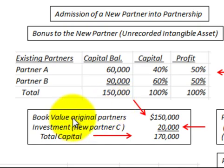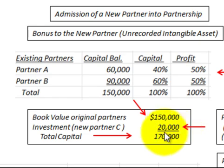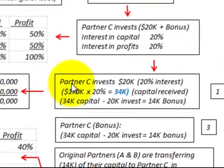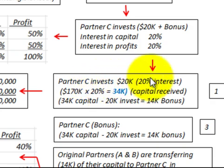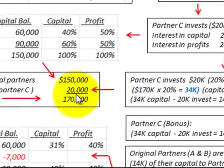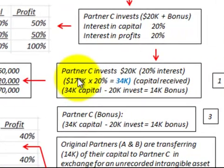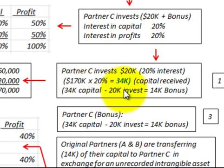Let's look at what our calculations would be. We have our book value of the original partners at $150,000, and then the investment by the new partner C of $20,000. So the total capital for the new partnership would be $170,000. Taking that $170,000 times their 20% interest, partner C would receive $34,000 in their capital account. The $34,000 minus the $20,000 investment equals a $14,000 bonus.